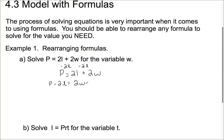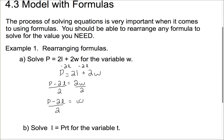Now that I've got the 2W completely by itself on this side of the equation, I want to get the W completely by itself. This 2 is multiplying the W, so to get rid of something that's multiplying, we divide. Whatever you do on one side of the equation, you have to do exactly the same thing on the other side. So this side is now just plain W, and on this side we have P subtract 2L divided by 2. Now if I knew what the perimeter was and what the length was, I could figure out what W was.